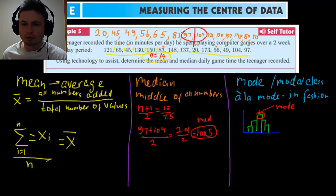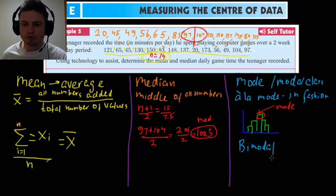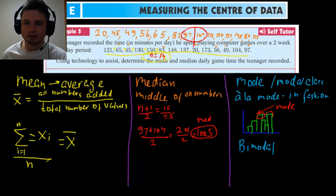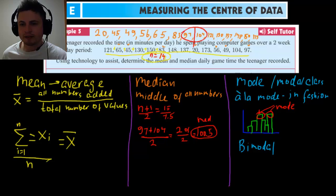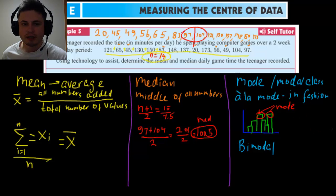Another word you may want to know is bimodal, which you may see on the test. Bimodal means there are two modes — sometimes you have two bars on a histogram that are the same height. This is a bimodal example where you have two modes. Really, the only way to find the mode from a raw list of values is to graph it first or make a frequency table first.